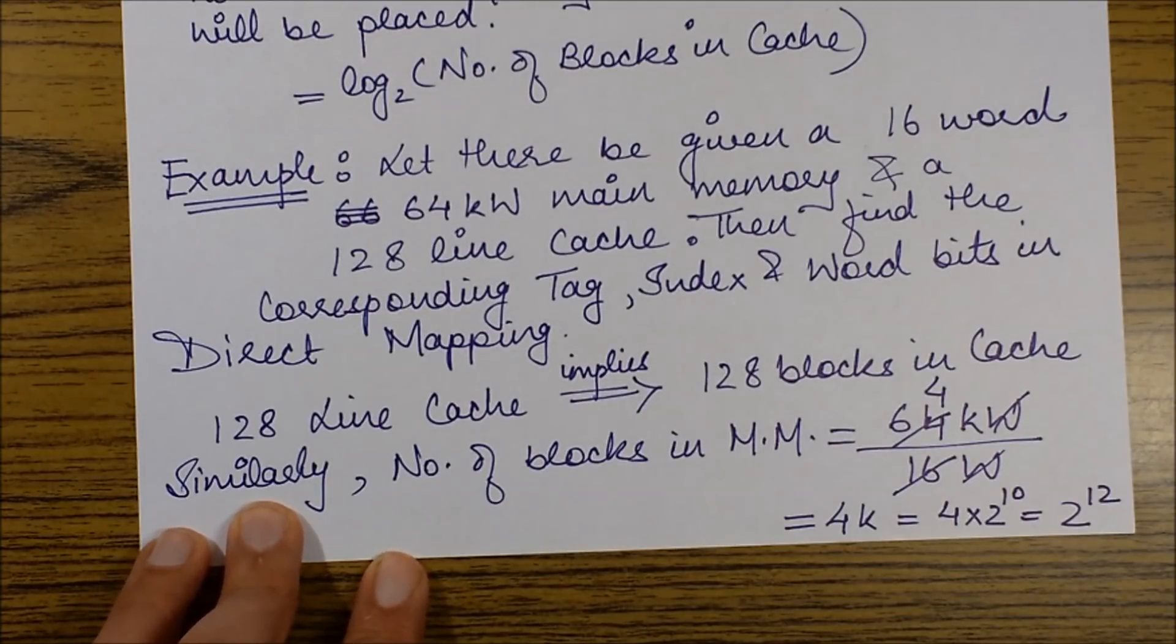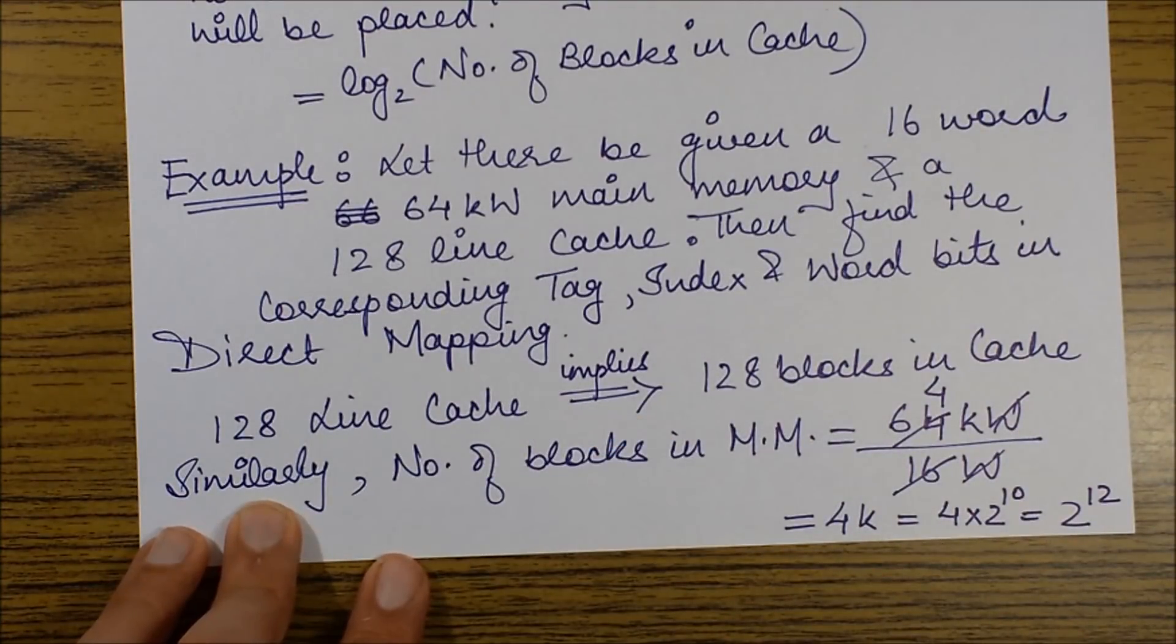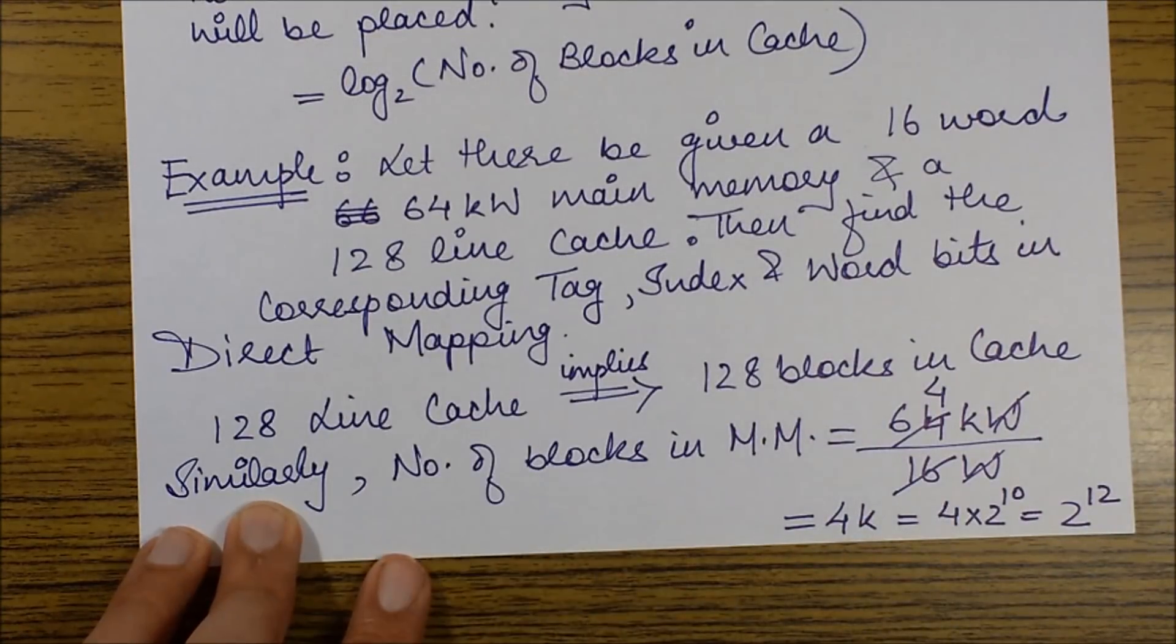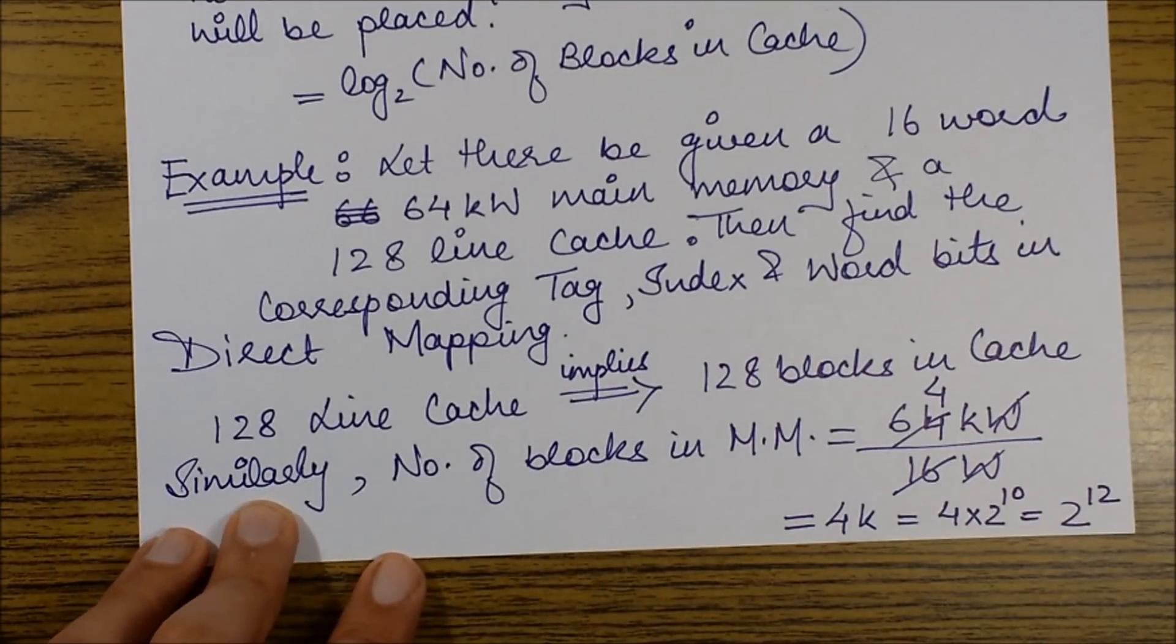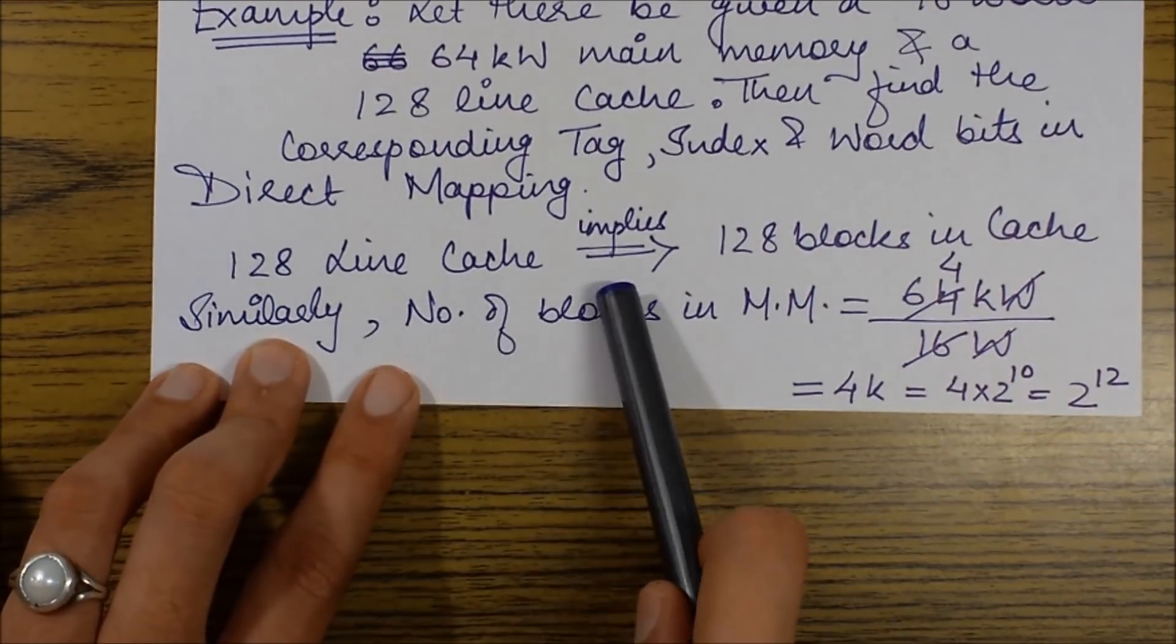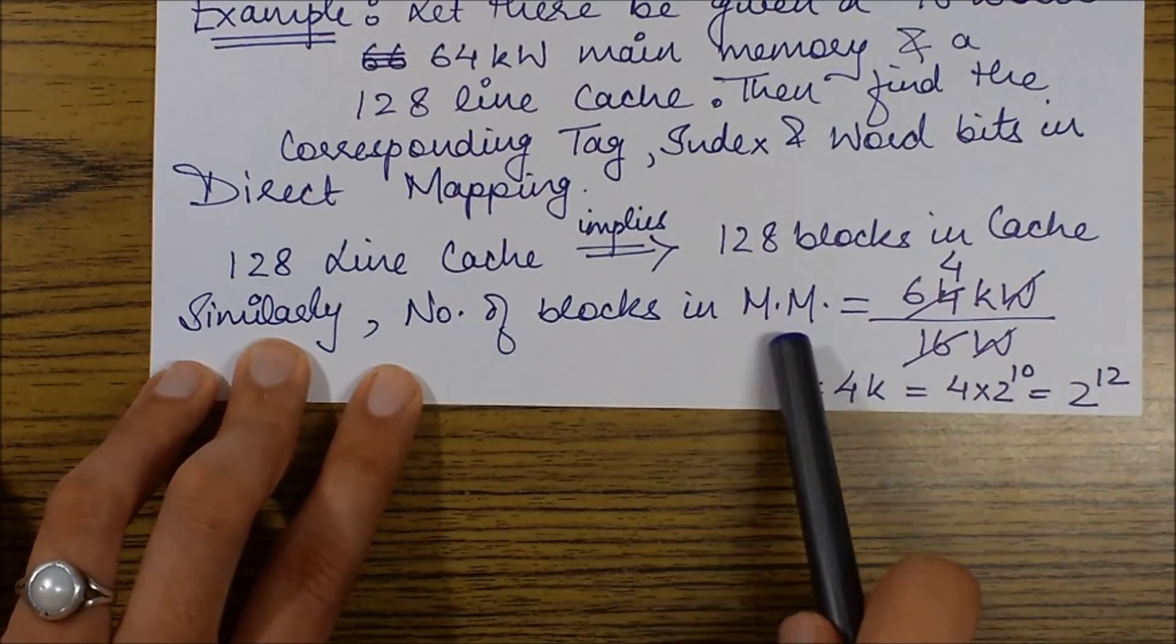What do we have specified in this question? The main memory is of size 64 kilowords, so the size of the main memory is given. The cache has 128 lines, which means the cache has 128 blocks.